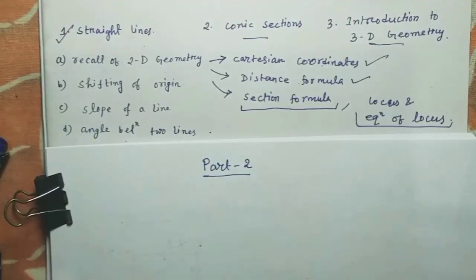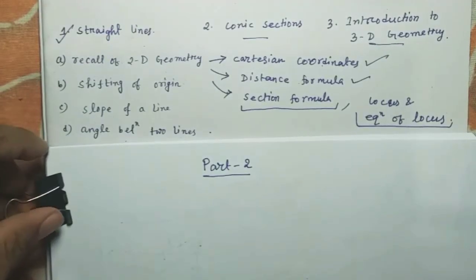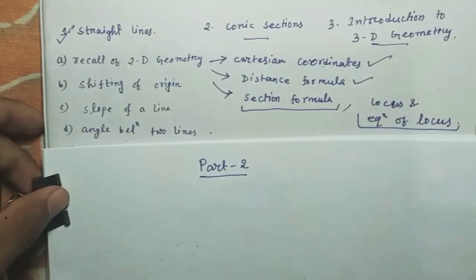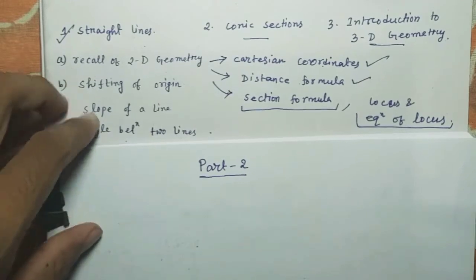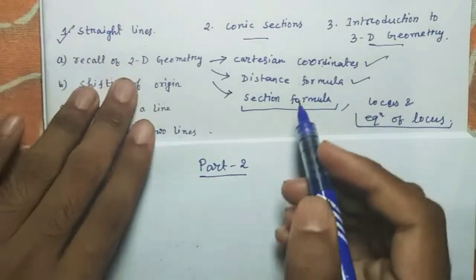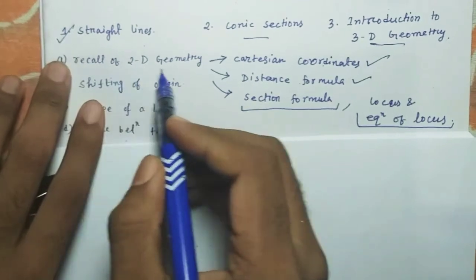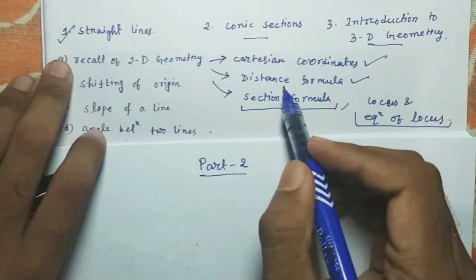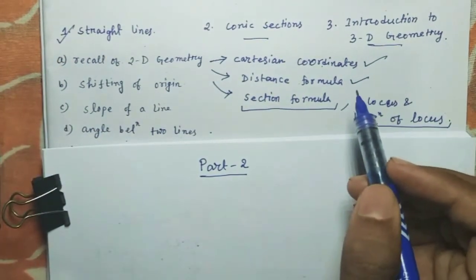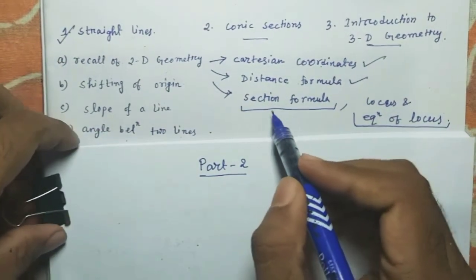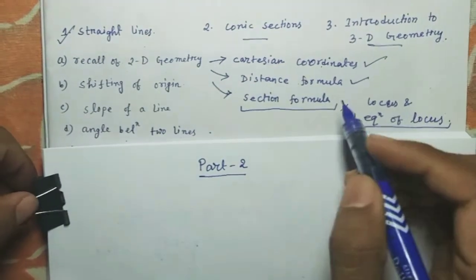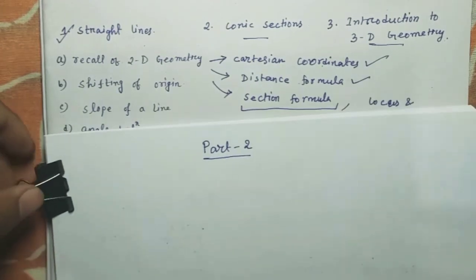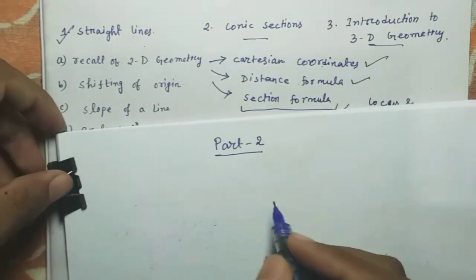Welcome, guys. In the second part of mathematics, we are talking about coordinate geometry. In the last video we covered straight lines — recall of 2D geometry: first the Cartesian coordinate system, and second the distance formula. Today we will discuss the section formula, but before that, one important topic was left: the area of a triangle in the coordinate system.